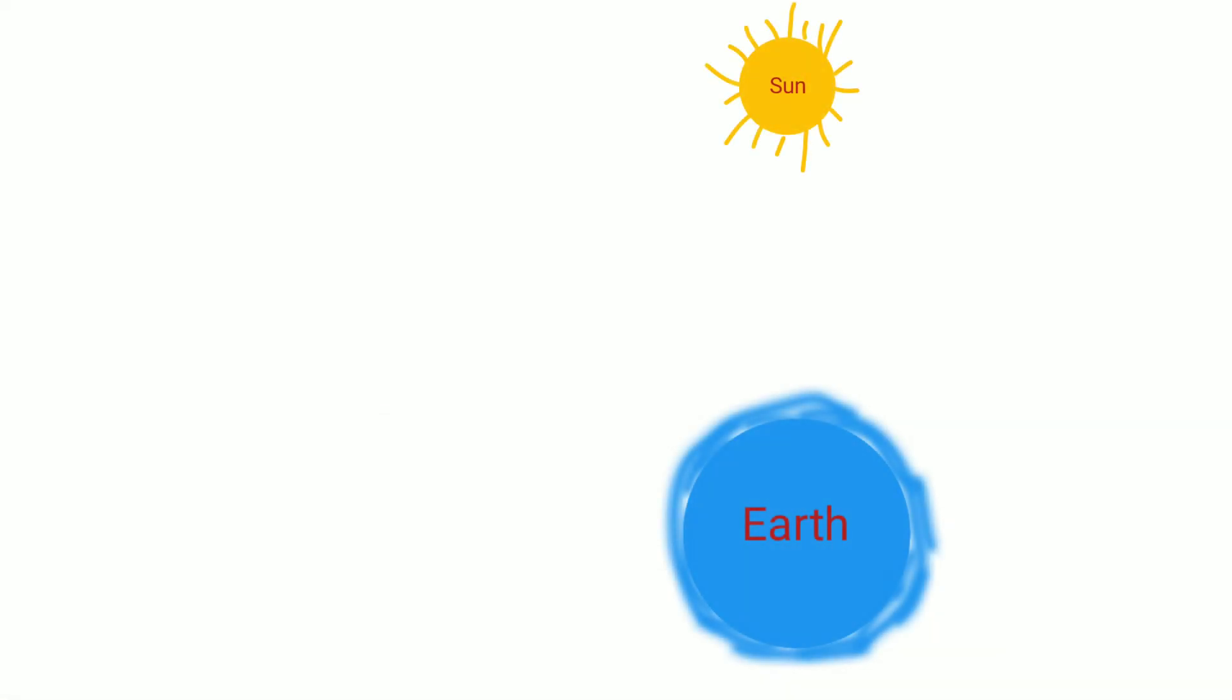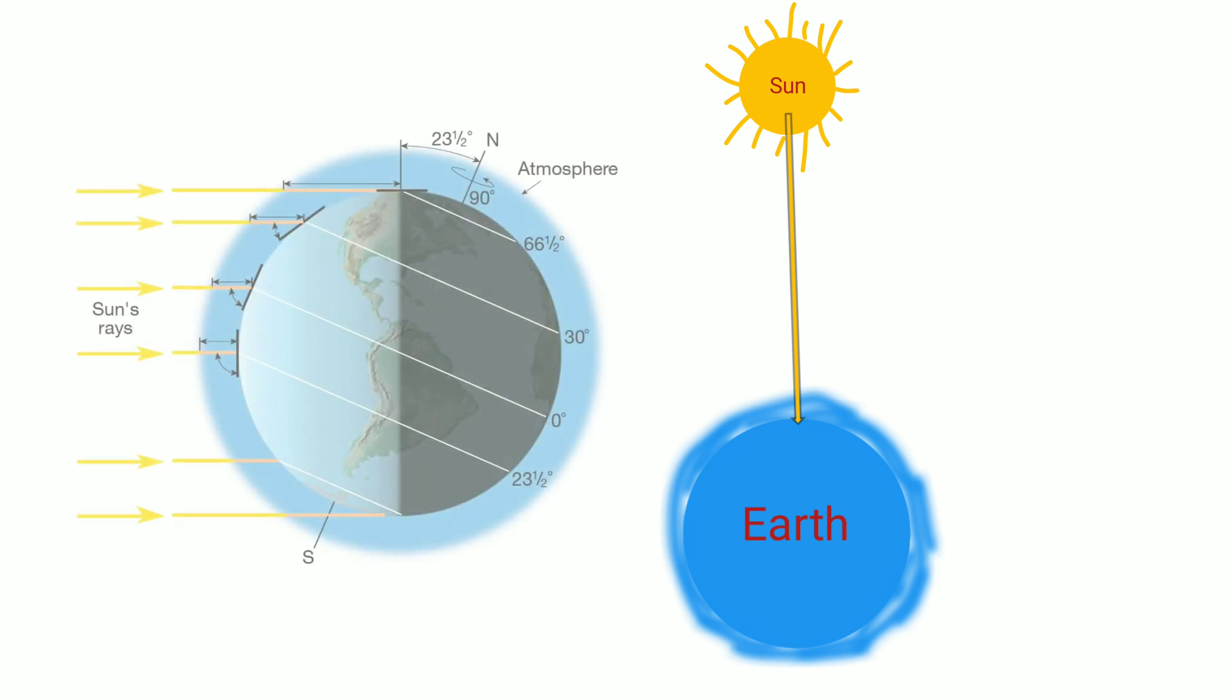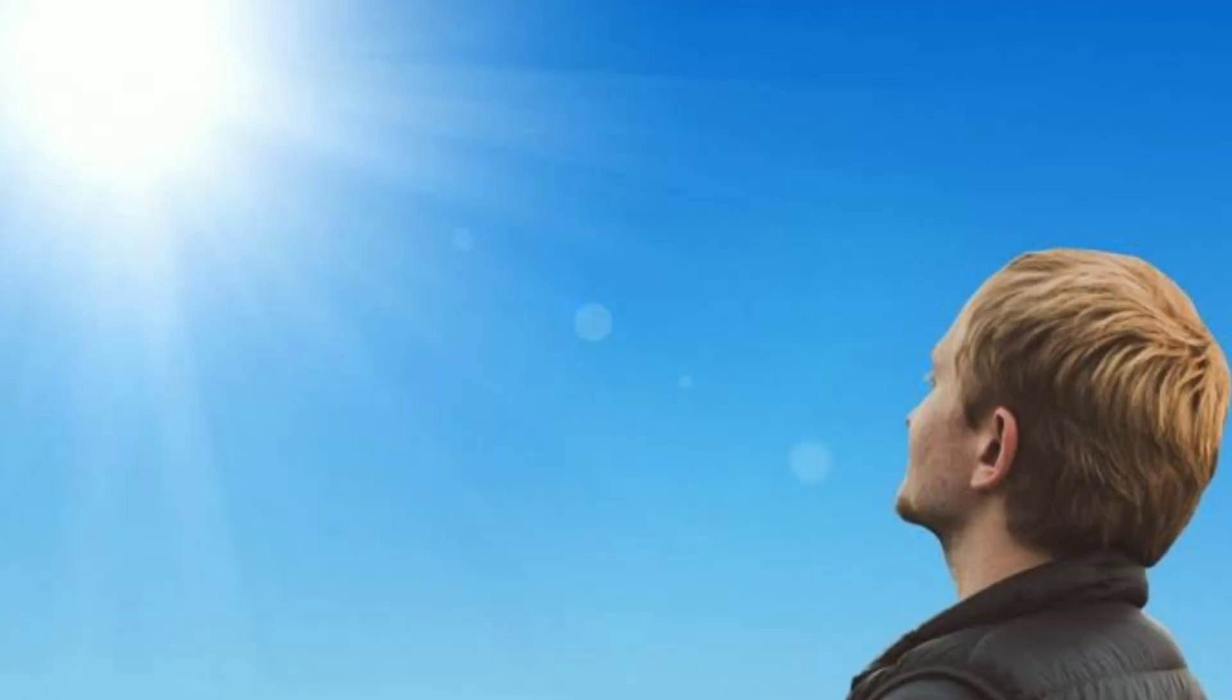Then the ray coming from the sun creates 90 degrees with the earth's surface and it crosses only the thickness of one atmosphere. That's why the intensity becomes very large.